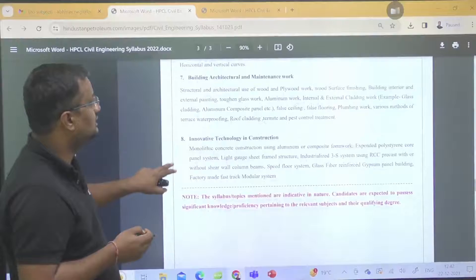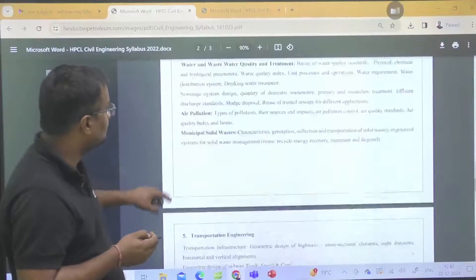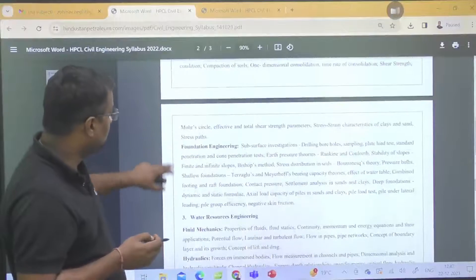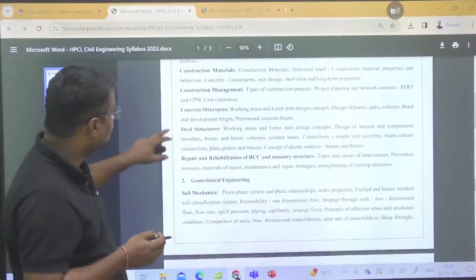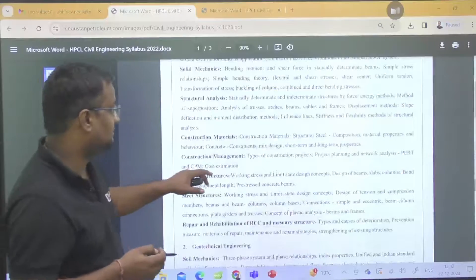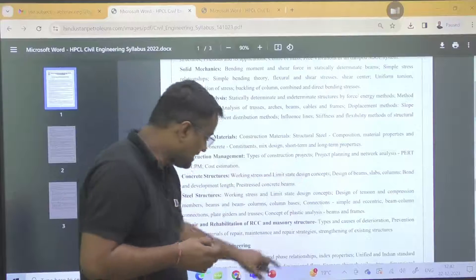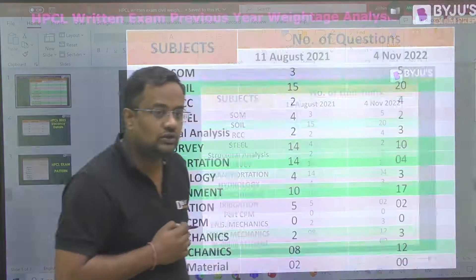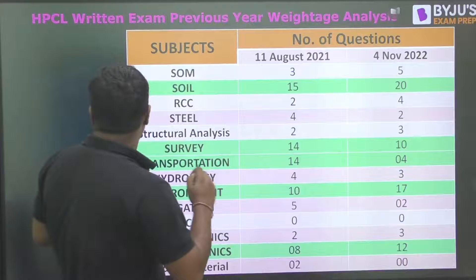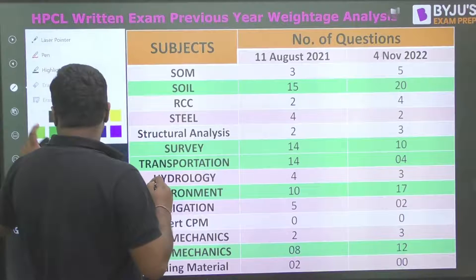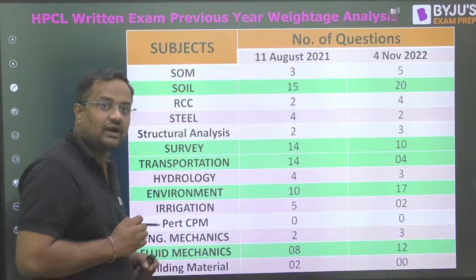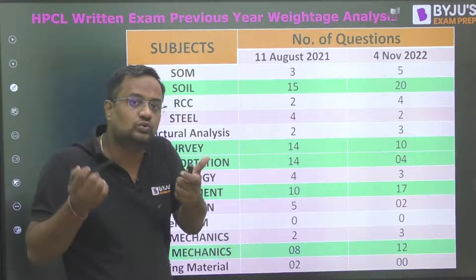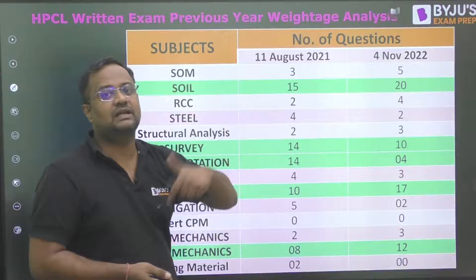Apart from a few topics like innovative technology and building architecture, the 2023 syllabus is more or less the same as the GATE syllabus. One important fact: the syllabus does mention PERT and CPM, but in the last two years not a single question has been asked from it. The weightage analysis I manually counted took around 45 minutes, but I'm presenting it so students can benefit in their preparation.